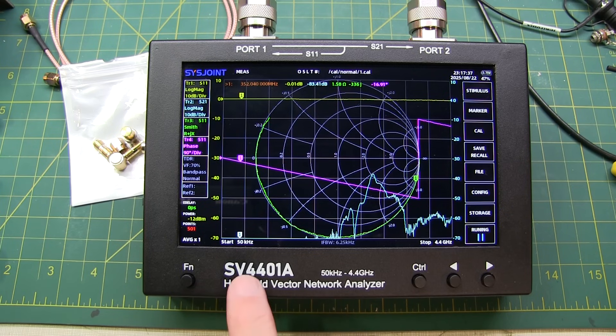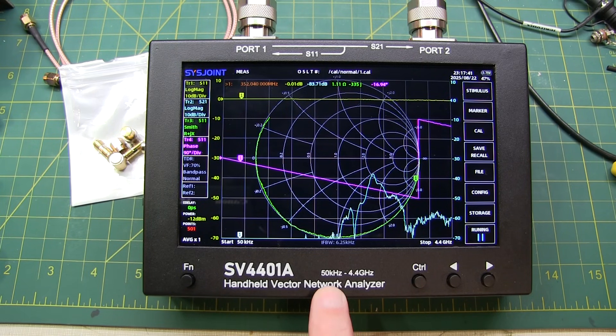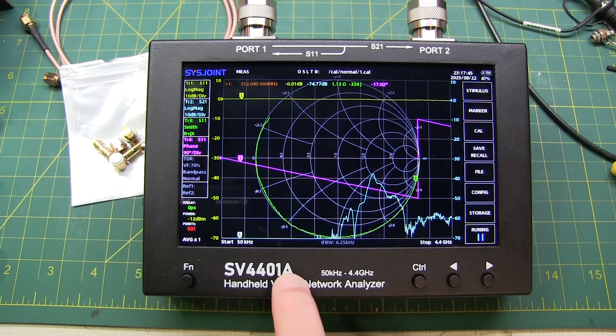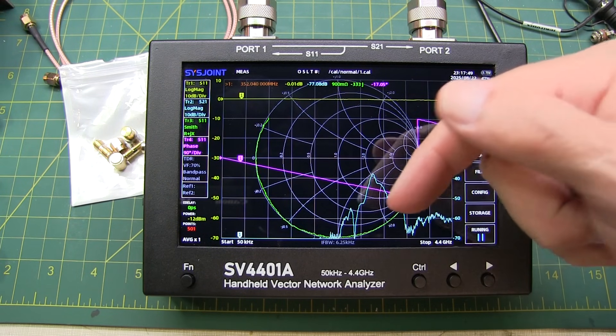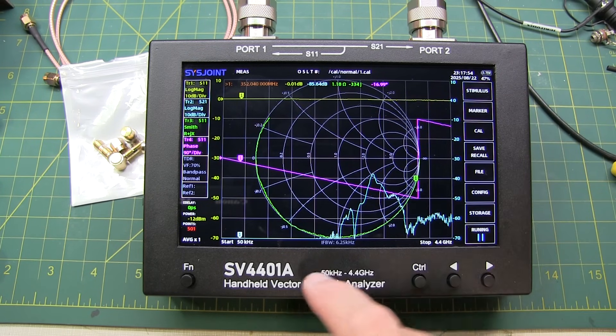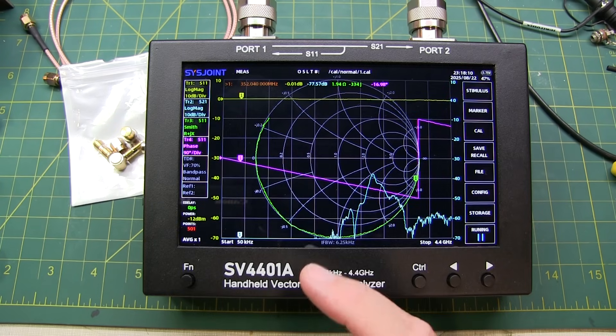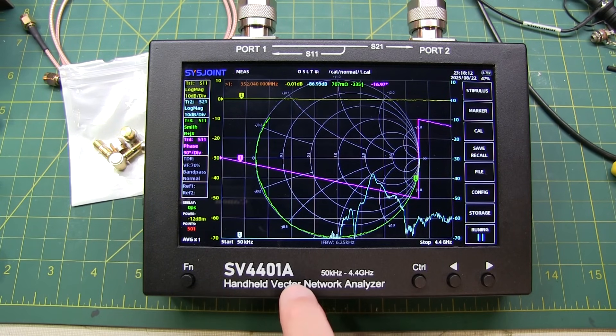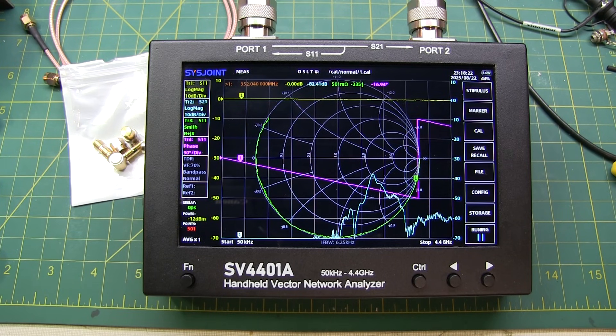So, that's the quick overview of the Sysjoint SV4401A Vector Network Analyzer. Again, this was provided to me from Chelagance, and I will put a link in the video description down below that links to the Chelagance website that also indicates all the different locations and distributors where you can purchase one of these for yourself. So, now I'll ask you, what would you like to see in terms of videos using this VNA? I've already got one in mind that I'm going to do, but I'd like to hear your ideas of videos that you would find useful for this unit, and I'll work on putting those together.